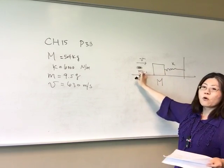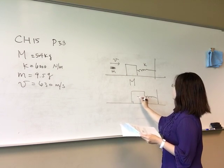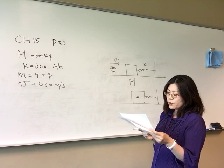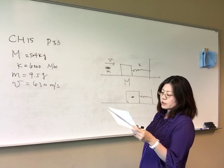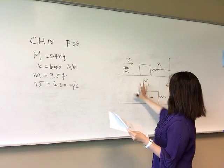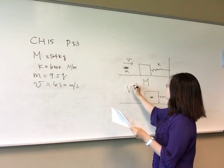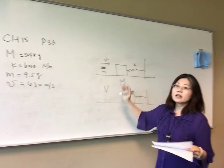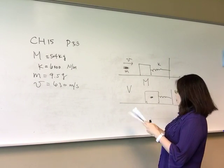Before collision we have the block and bullet separately; after collision they move together. Assuming compression of the spring is negligible until the bullet is embedded, we want to determine the speed of the block immediately after collision. This is a completely inelastic collision.